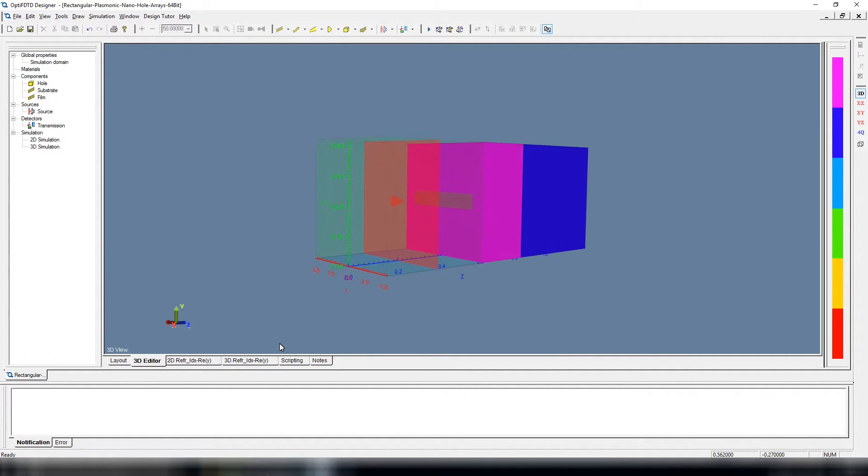Here, the pink colored object represents the gold film, the brown thin rectangle represents the air hole, and the blue backing represents the dielectric cladding.